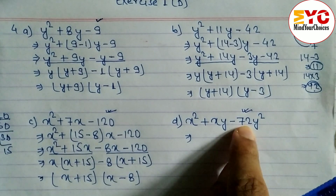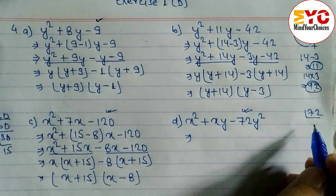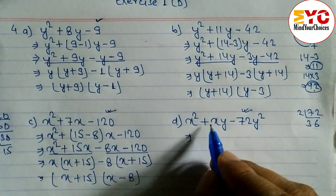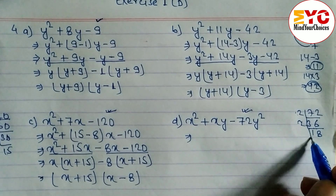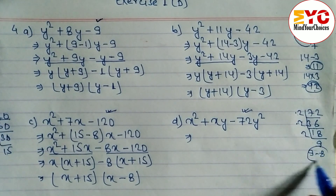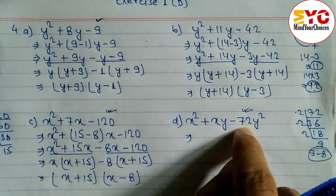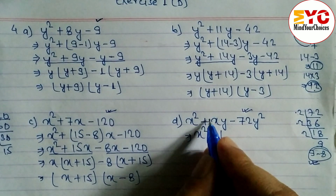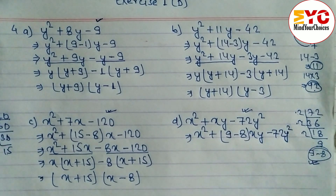Problem D: we need factors of 72 with subtraction 1. Trying: 9 × 8 = 72 and 9 - 8 = 1. So the factors are 9 and 8. We write x² + 9xy - 8xy - 72y², replacing the middle term using (9 - 8)xy.